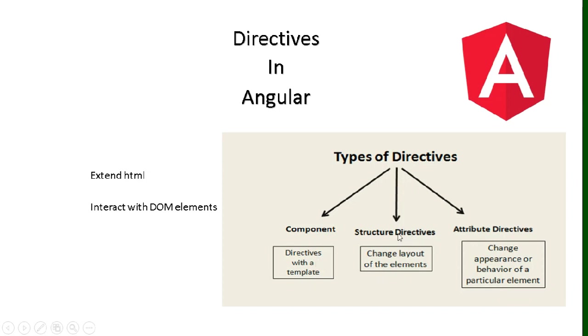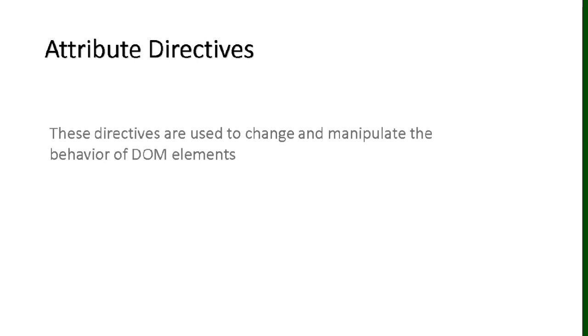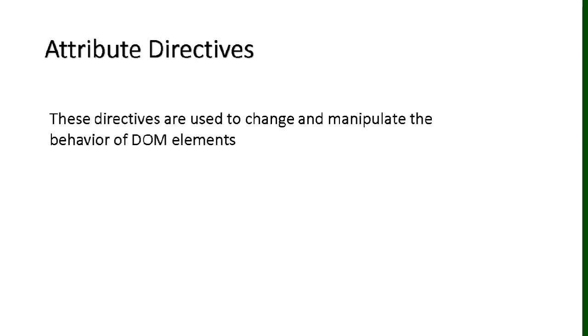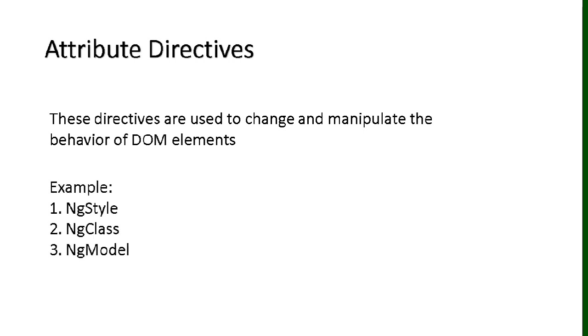Attribute directives are used to change and manipulate the behavior of DOM elements. For example, you can change the style or the class. Some built-in examples include ngStyle, ngClass, and ngModel. We have already used these in the previous section, so we won't discuss them in this video.